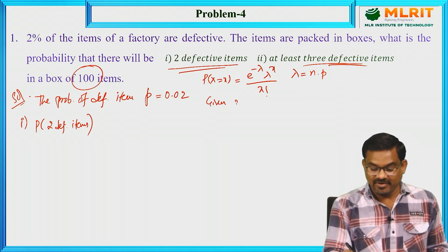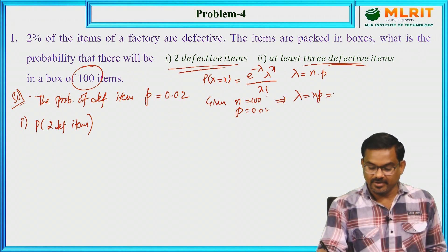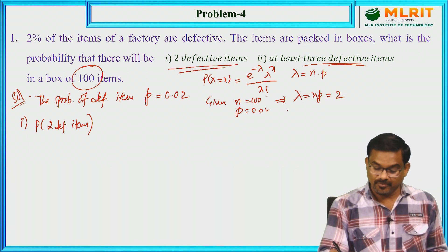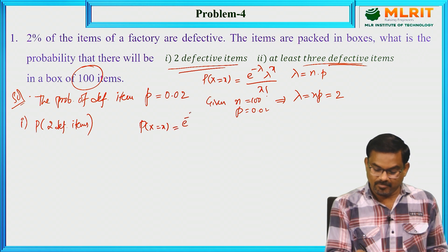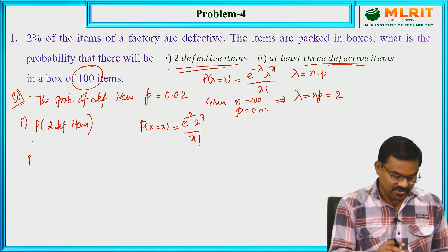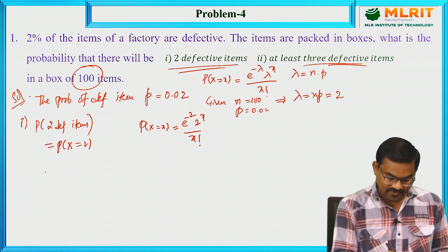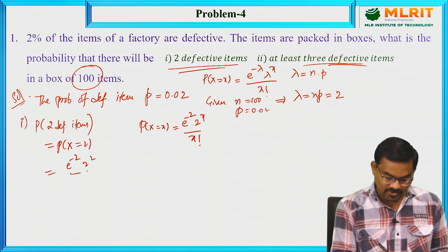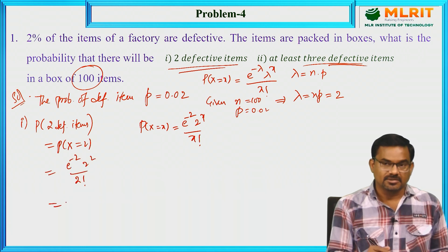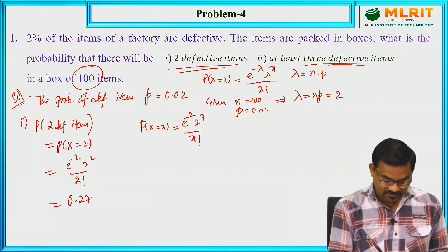Using Poisson Distribution, the formula is e^(−λ) · λ^x / x!. Given n = 100 and p = 0.02, so λ = n·p = 100 × 0.02 = 2. Therefore, the formula becomes e^(−2) · 2^x / x!. For the first question, P(X = 2): x = 2, so e^(−2) · 2²/2! = 0.2706.